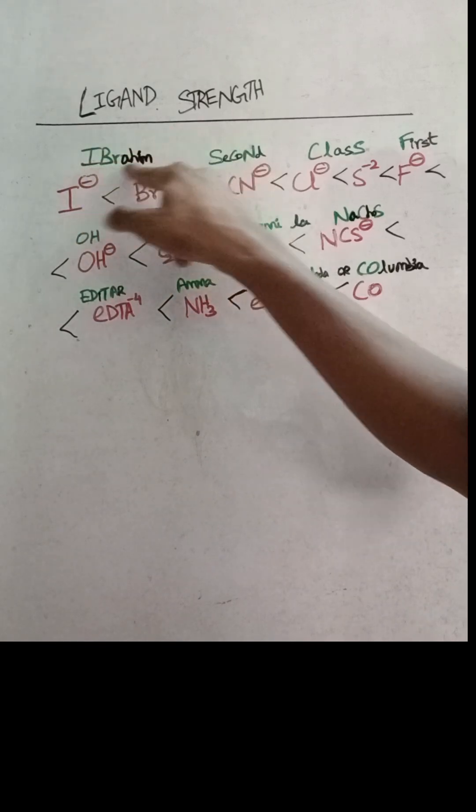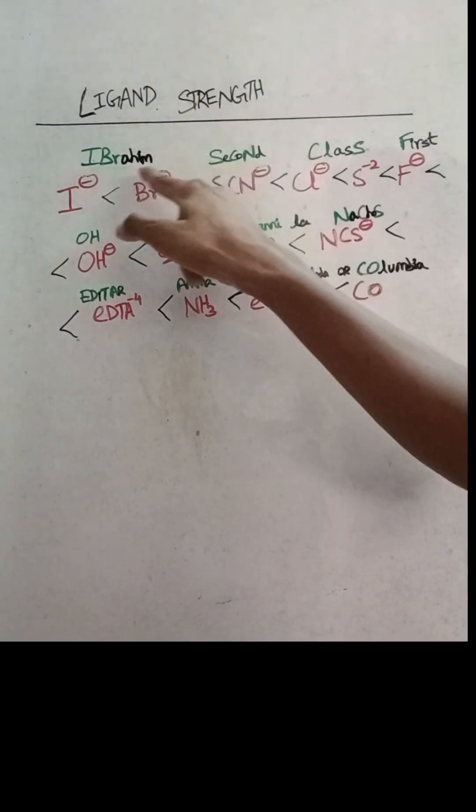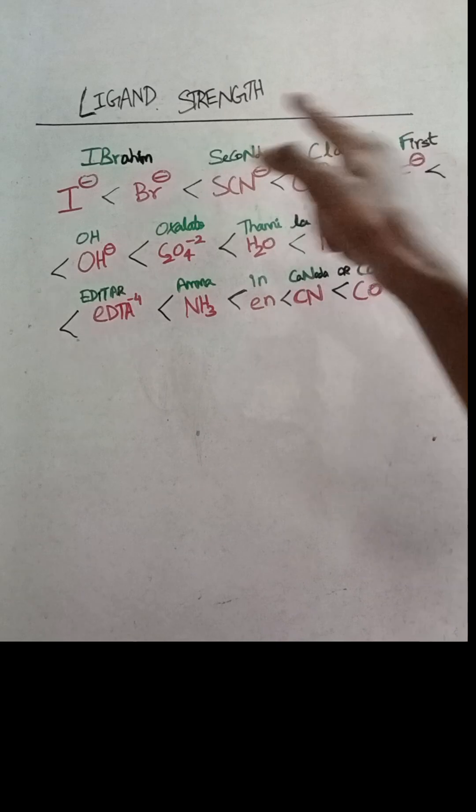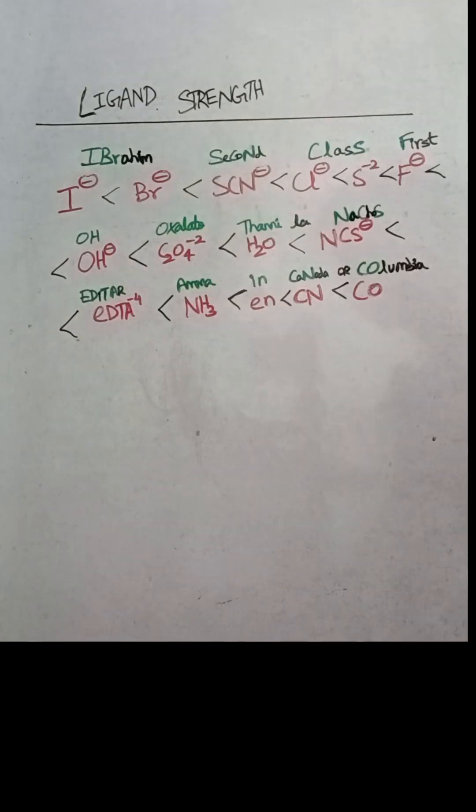Ibrahim. I-Ibrahim. Second class first mark. O-Oxalato. I-Oxalato. You see ounces. Auslin.